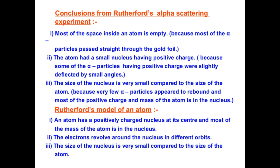From these observations we can conclude: most of the space inside the atom is empty, which is why most alpha particles passed straight through the gold foil without changing direction. The atom has a small nucleus where positive charge is present. Particles that deflected at small angles must have passed near the region where positive charge was present. The size of the nucleus is very small compared to the size of the atom.